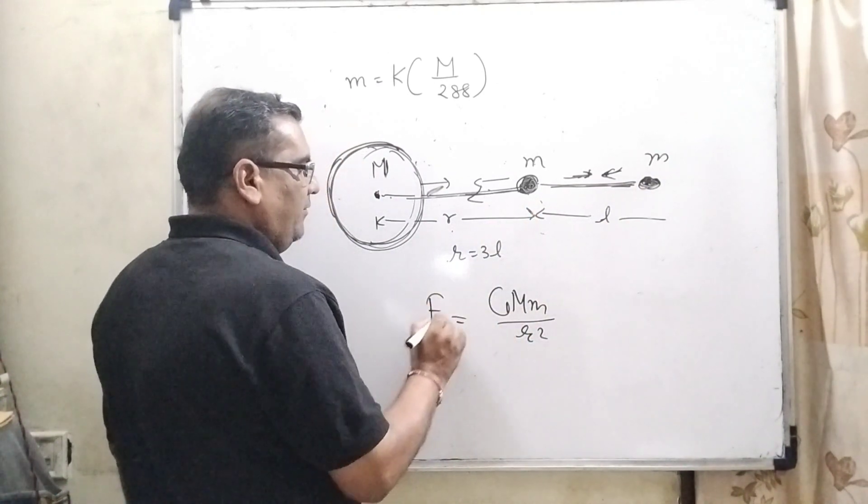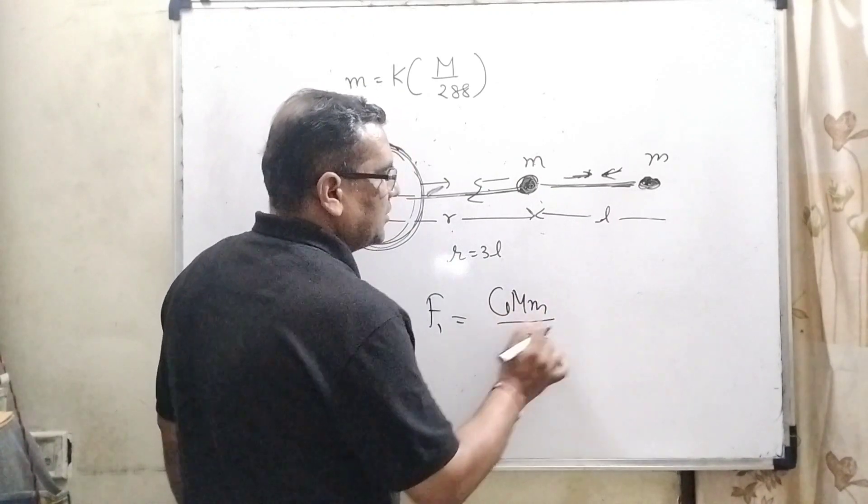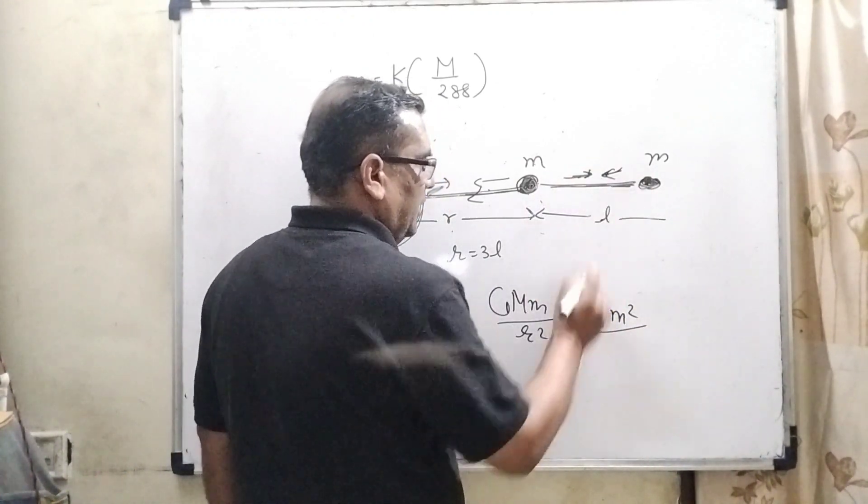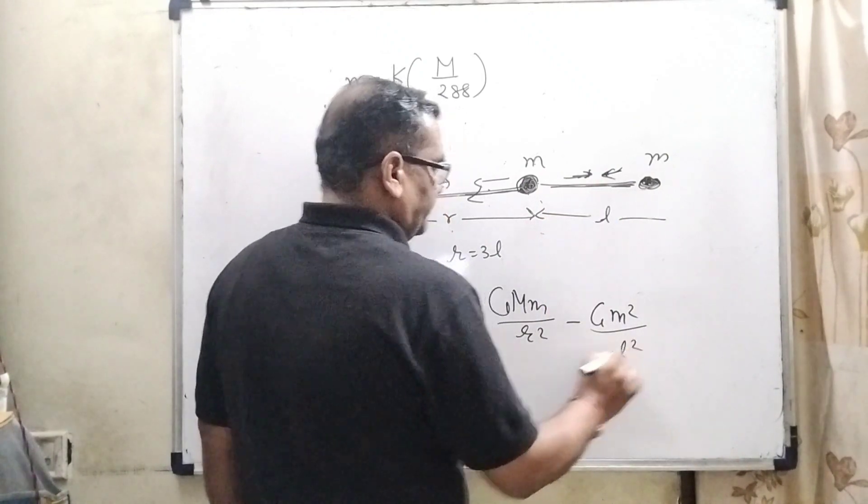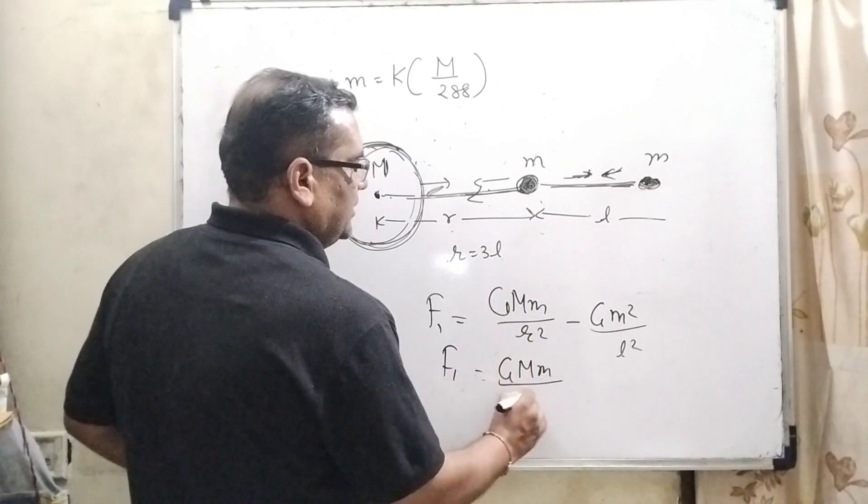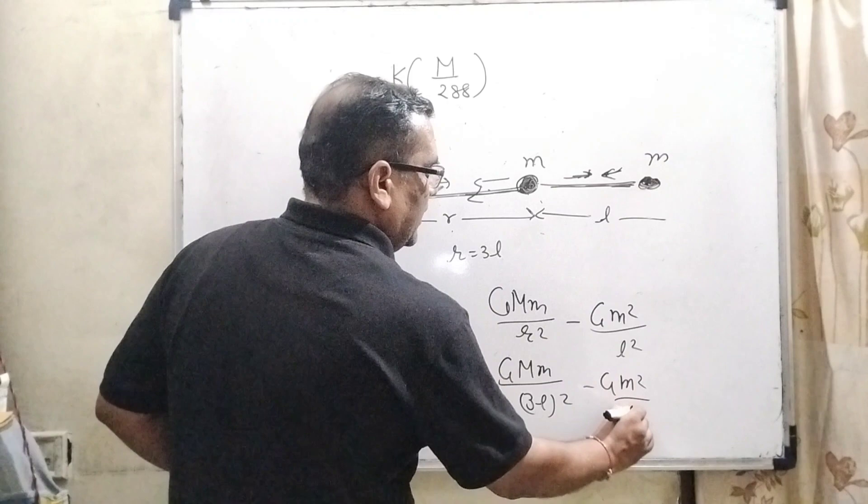It means net force F1 is equal to G capital M small m upon r square minus G M square, because M into M and the distance is L square. Here we have given the value of r is 3L square, so G M square on L square.